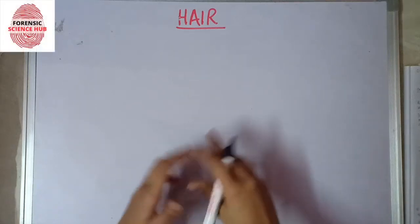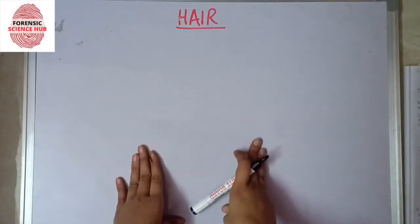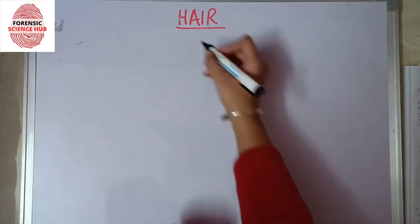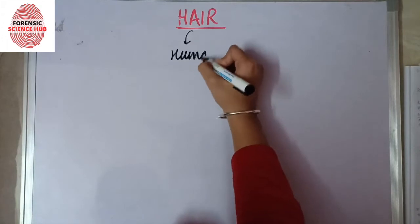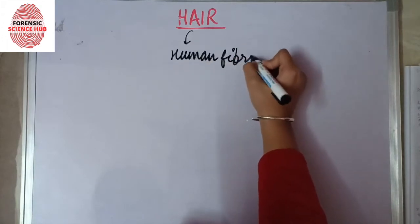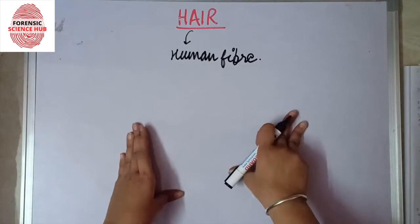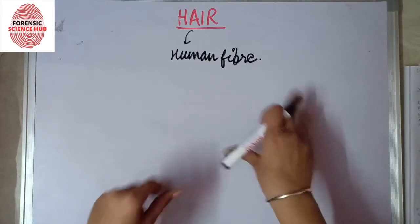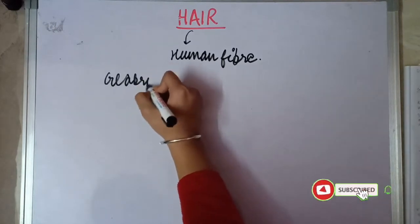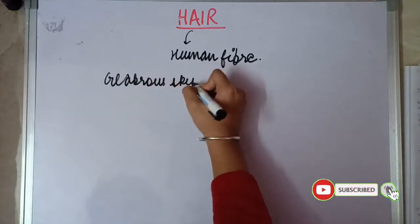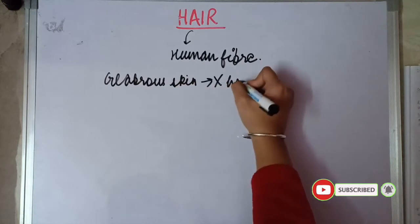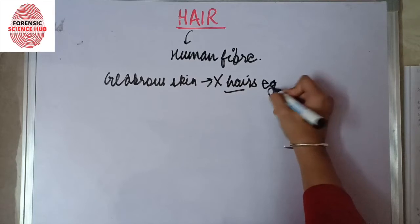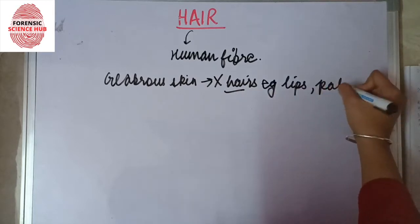Today I'll be discussing the structure of hair. Hair is a human fiber present on the surface of our body. Not all surfaces are covered with hair — certain portions are known as glabrous skin, which are devoid of hair. Examples include the lips and the palmar surfaces of both hands as well as toes, portions with scars, the navel, etc.